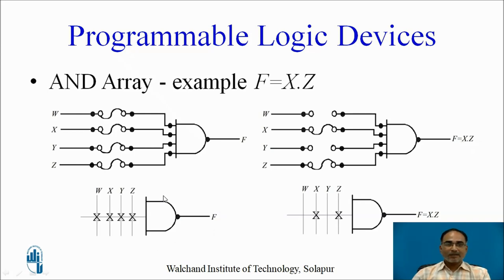This is one of the representations to show a multi-input AND gate where the rows and columns have fusible links. If you blow these links for the given function, the symbol will look like what is shown here.